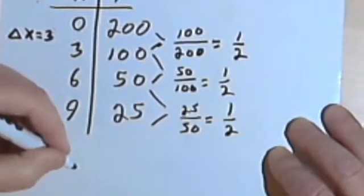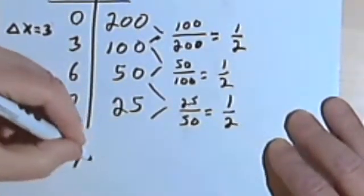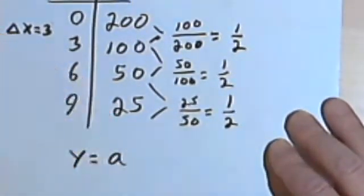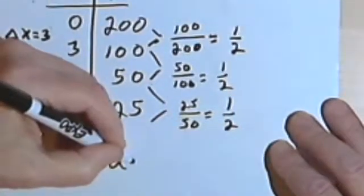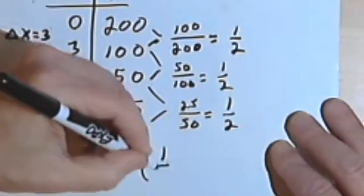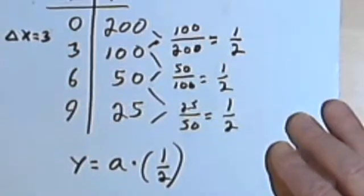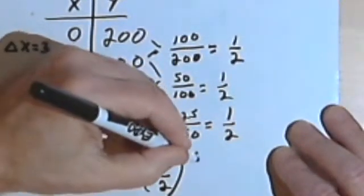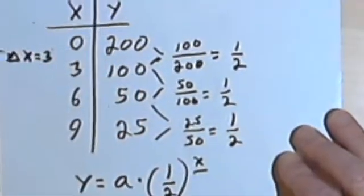So let's write what we have so far. y equals a... I don't know what a is yet... times the fraction one-half raised to the x over delta x. Well, delta x is 3.